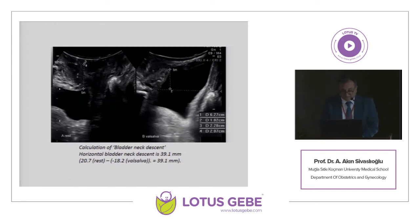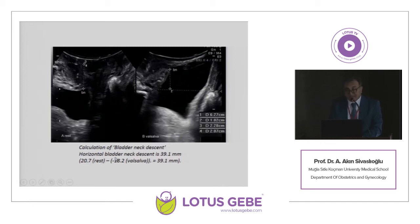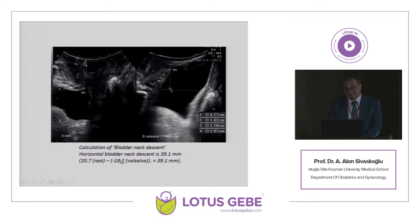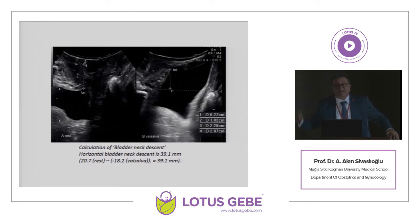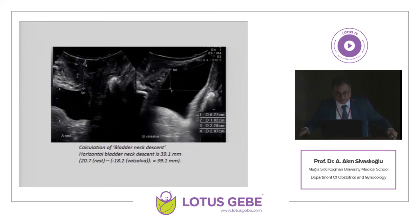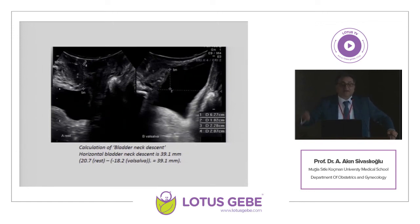This is basic mathematics. For example, if the measurement at rest is 20.7 millimeters and under valsalva the bladder neck is above the reference line at minus 18.2 millimeters, you add both values: 20.7 + 18.2 = 39.1 millimeters. This exceeds 30 millimeters, indicating urethral hypermobility. Urethral hypermobility is more or less related to stress urinary incontinence, but it does not mean every case of urethral mobility directly confirms stress urinary incontinence.